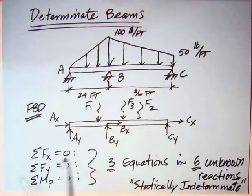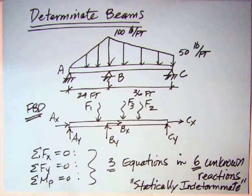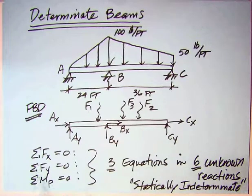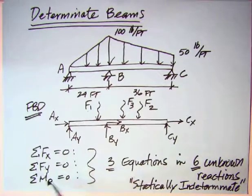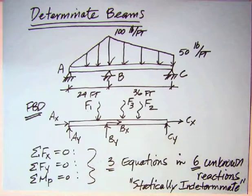You've got three equations of equilibrium: sum of the forces in X is zero, sum of the forces in Y is zero, and sum of the moments about any fixed point you might pick, point P, equals zero. So you end up with three equations of equilibrium, but you've got six unknown reactions. That's referred to as statically indeterminate. It doesn't mean it's unsolvable. It just means you cannot come up with the answers from the equations of equilibrium alone. You need equations from some other place.